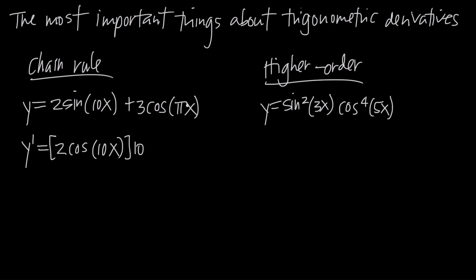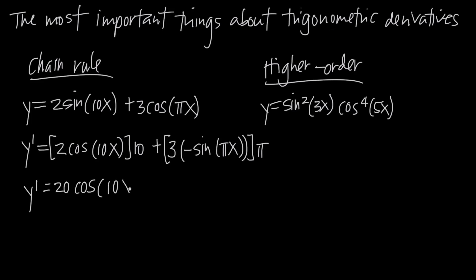Same thing for 3cos(πx): leave the 3 out front, the derivative of cosine is negative sine, giving negative sine of πx, and then multiply by the derivative of the inside function πx, which is π. Simplifying, the 2 times 10 gives 20cos(10x), and the 3, π, and negative combine to give minus 3π·sin(πx). That is the derivative.